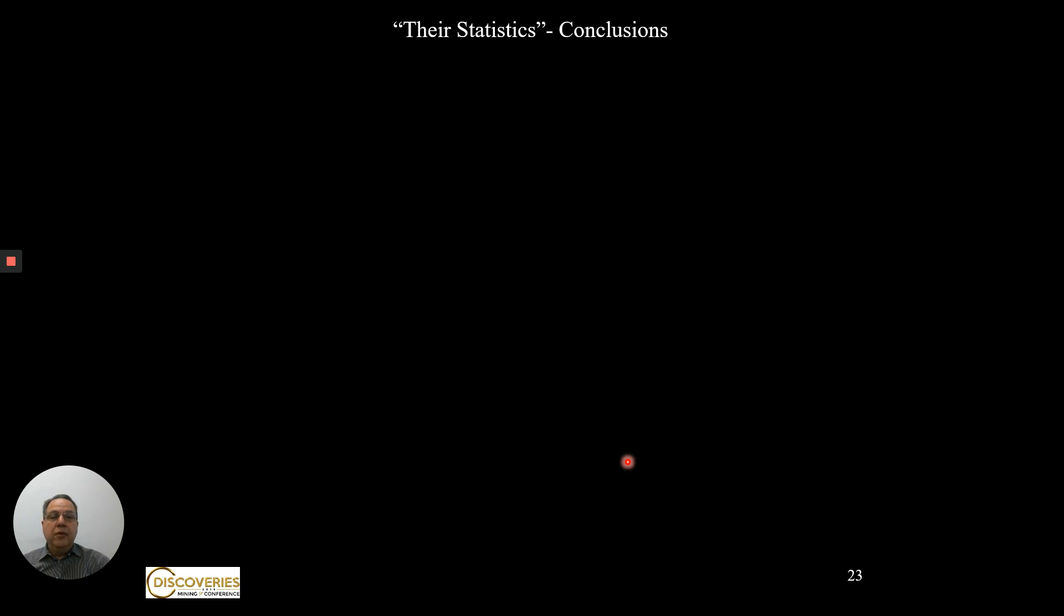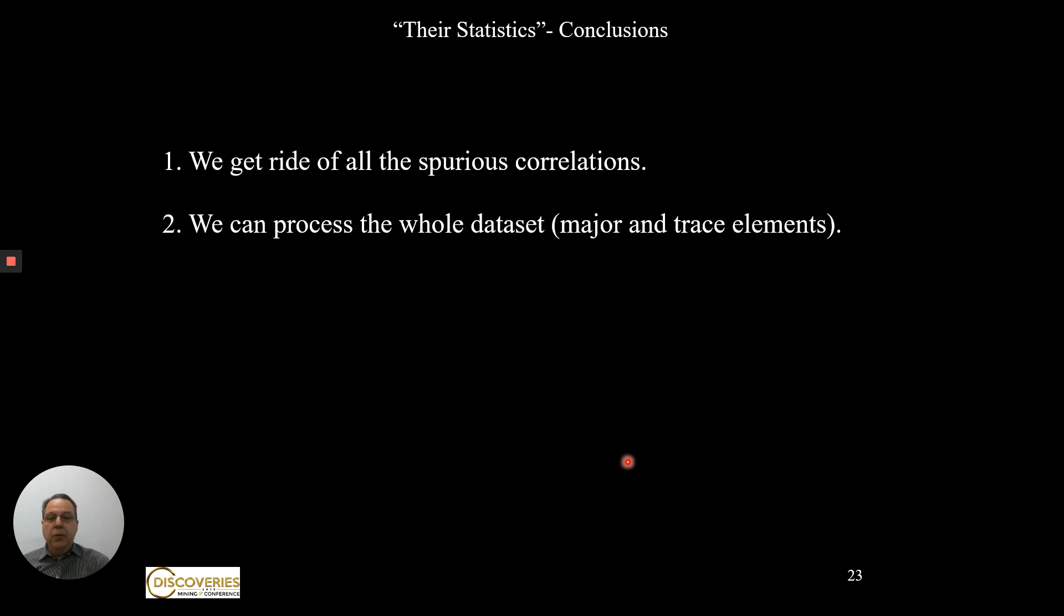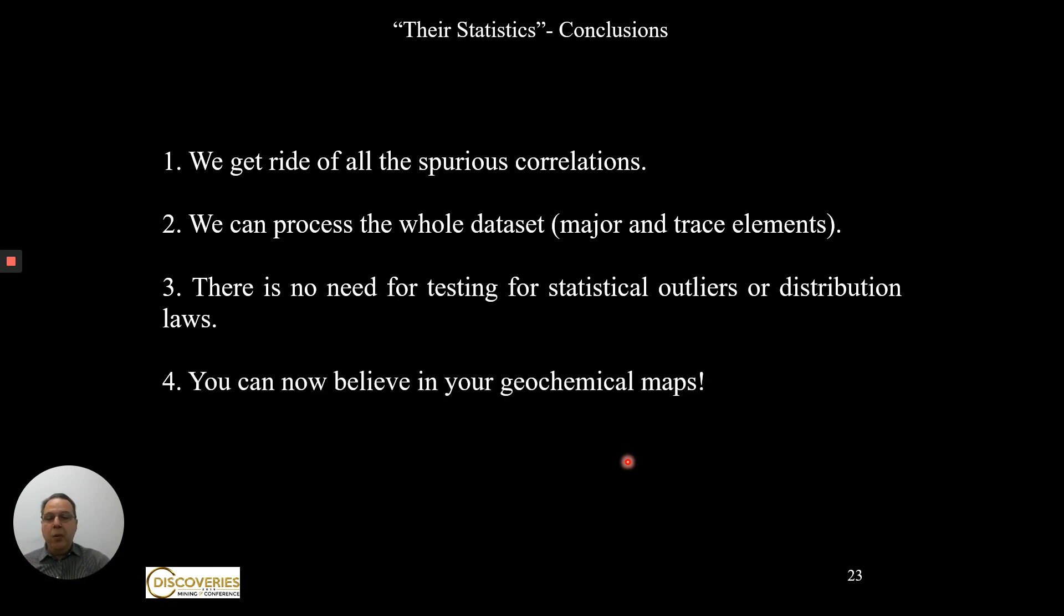Some conclusions of their statistics: we get rid of the spurious correlations. The correlations we have are the real ones. We can process the whole dataset, majors and trace elements together, not a problem. There is no need for testing for statistical outliers or distribution laws. And one of the most important ones: you can now believe in your chemical maps, which is something very useful and important.